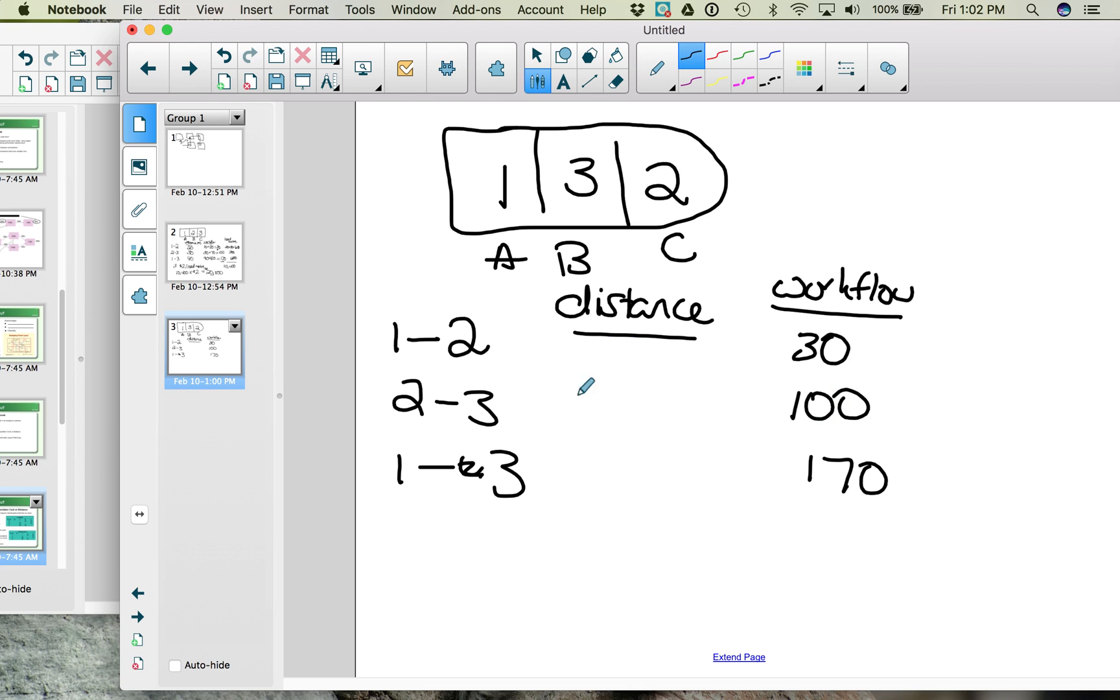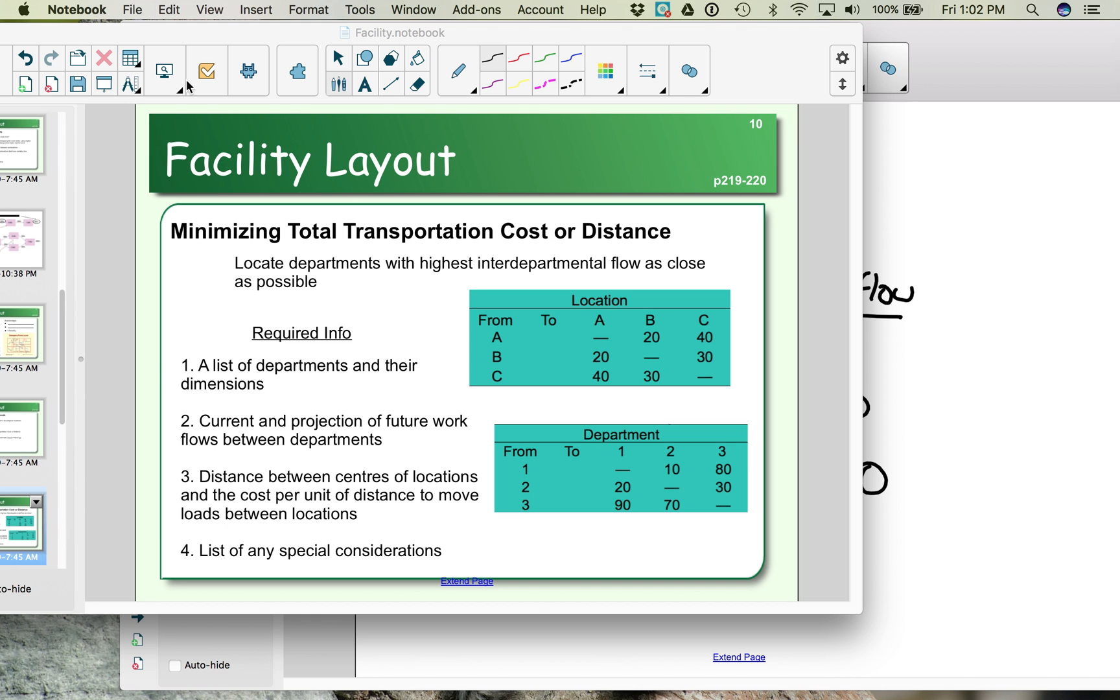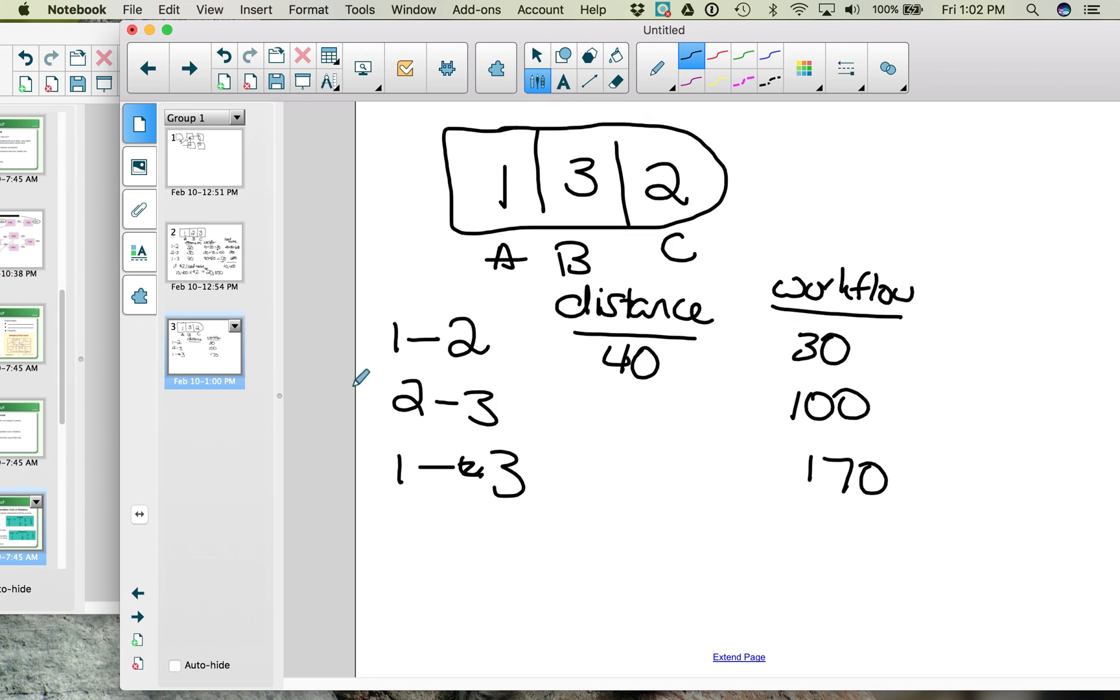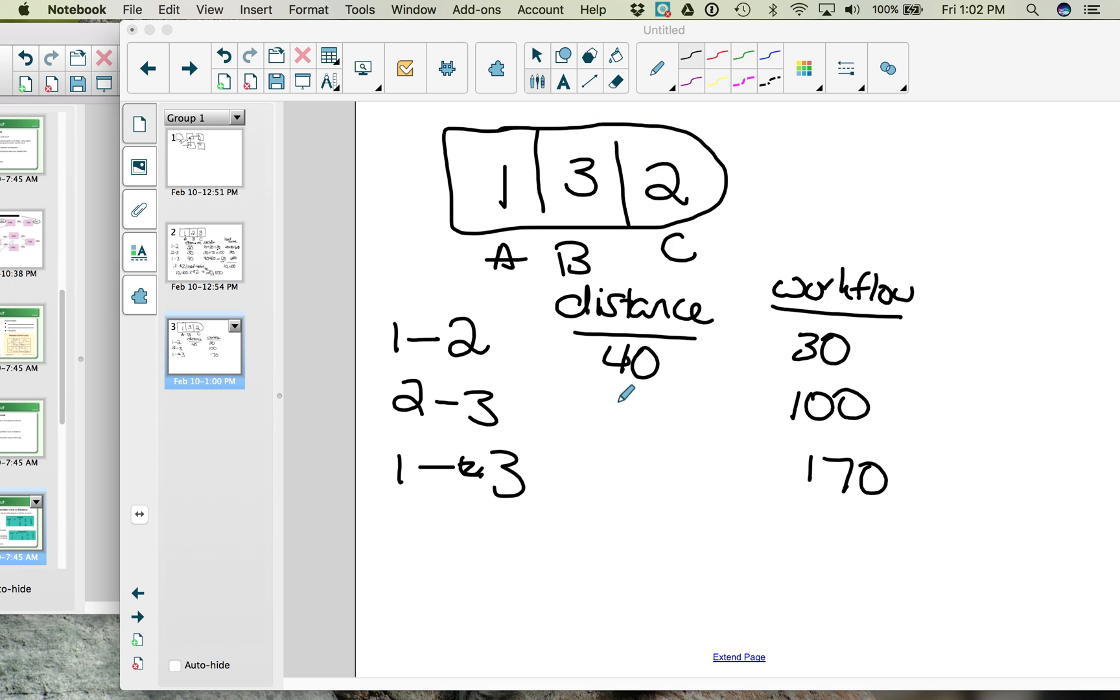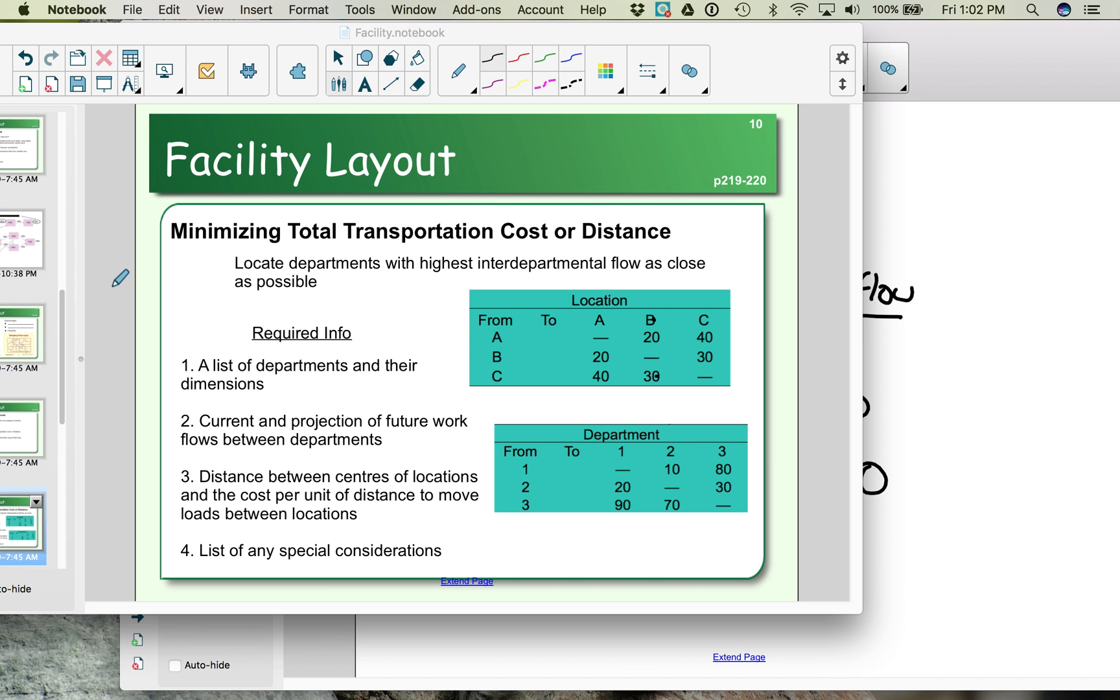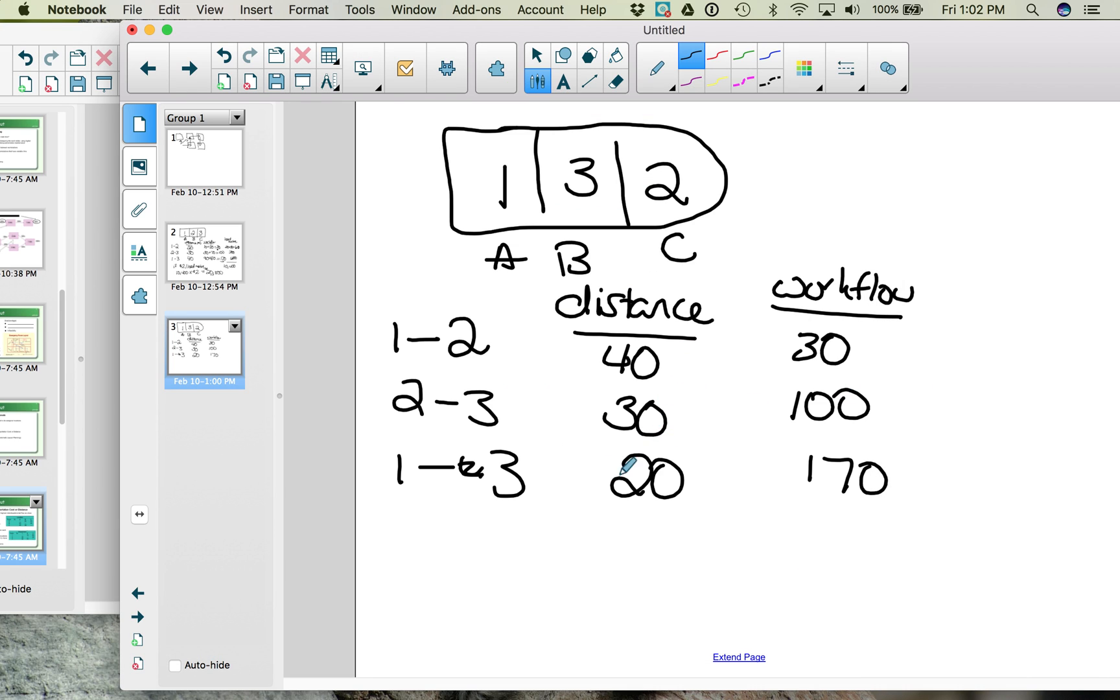The distances are what have changed. Now we see that 1 is in the A spot and 2 is in the C spot. So let's look at the distance between A and C. The distance from A to C is 40. Two and 3 are in the B and the C spot. So let's look at B and C. B and C are 30. And we look at 1 and 3. One and 3 are in the A and B slot, which has a distance of 20. So we should see the smallest distance with the most workflow, the longest distance with the least workflow.